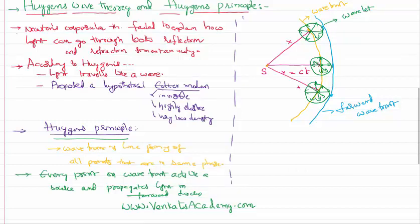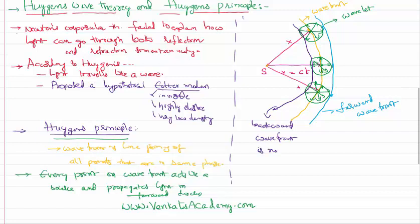In fact, we can also join the lines at the back, which is called the backward wavefront, but light is not going to go backward. This backward wavefront is not effective. Though there is a physical backward wavefront, it is not capable of pushing the light in a backward direction. Therefore, light always travels in a forward direction. This is how Huygens principle explains that light is able to travel for a longer distance, because every point on the wavefront acts like a primary source.